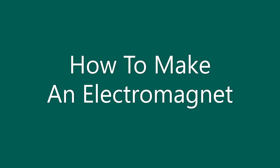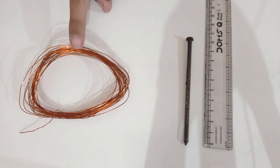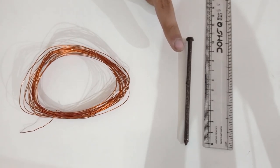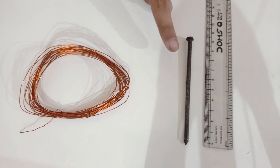First, we will make the electromagnet. Here, I have enamel coated insulated copper wire. We will also need an iron nail, around 6 to 10 cm long.